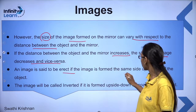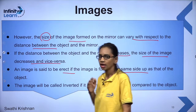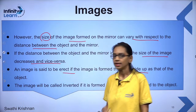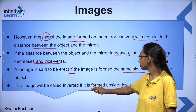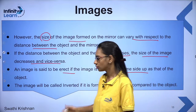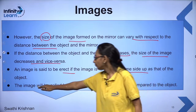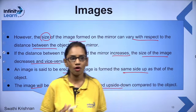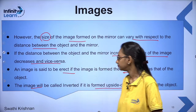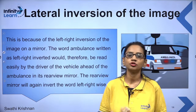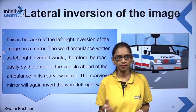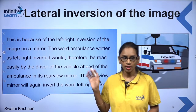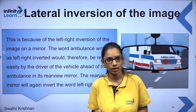The image is said to be erect if the image is formed on the same side as that of the object. Erect images are generally virtual images. The image will be called inverted if it is formed upside down relative to the object. Real images and virtual images are formed depending on the type of mirror. We will discuss which mirror forms which kind of image.